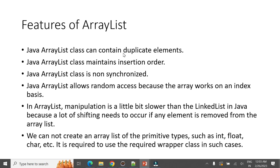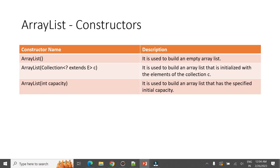The key features of ArrayList are: it can contain duplicate elements, it maintains insertion order, it is not synchronized meaning it is not thread-safe, and it allows random access via index. ArrayList manipulation is slower than LinkedList because a lot of shifting is needed when removing elements by index. Also, we cannot create an ArrayList of primitive types like int or float — we must use the corresponding wrapper classes.